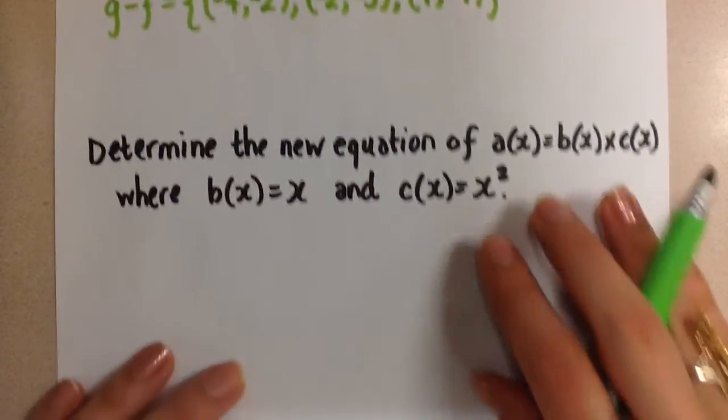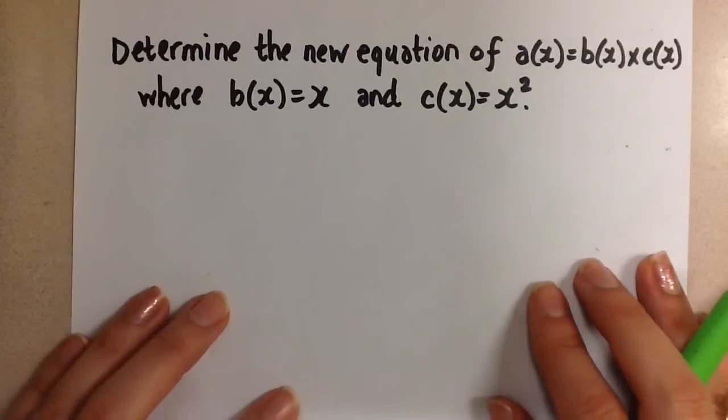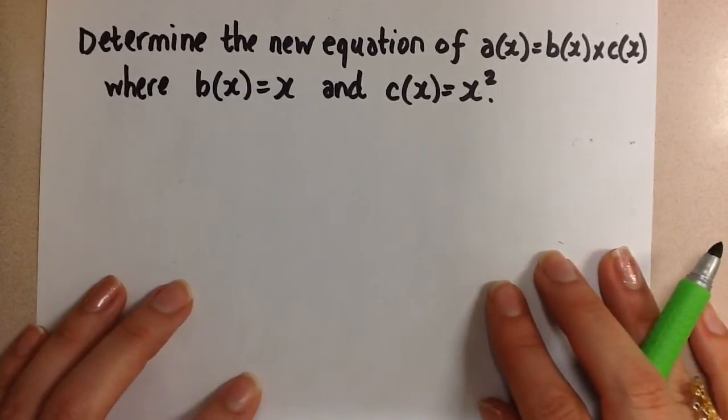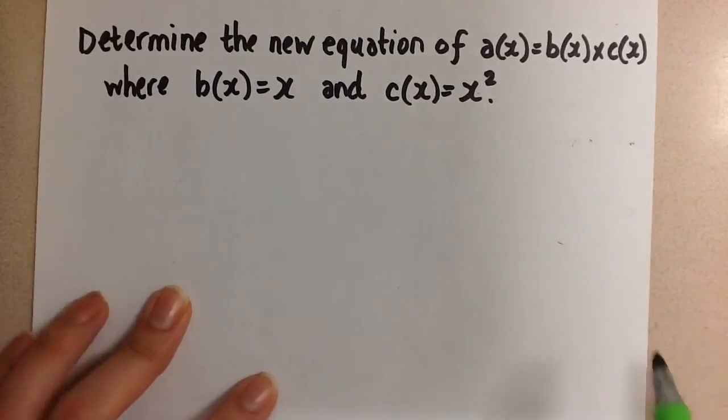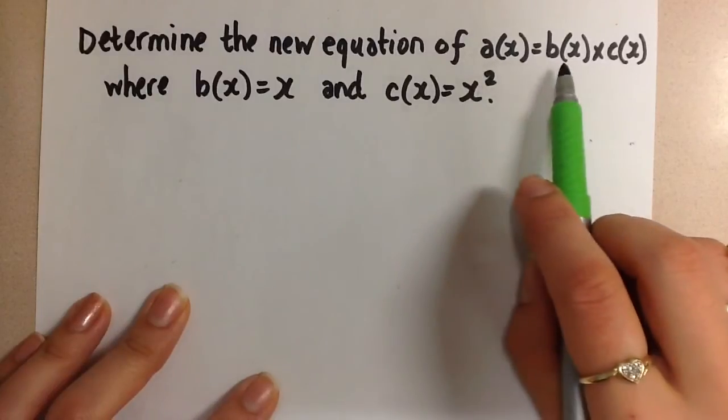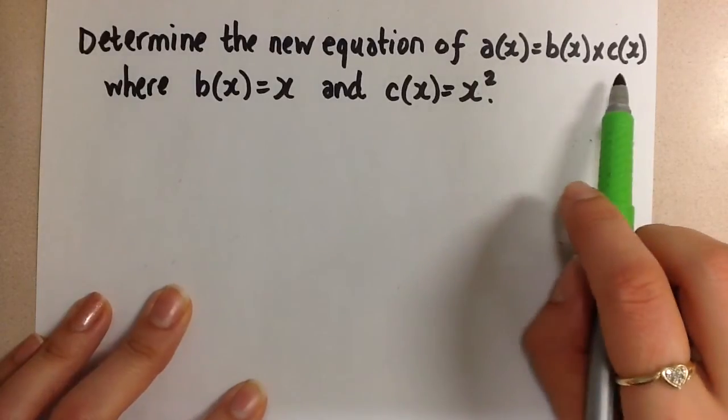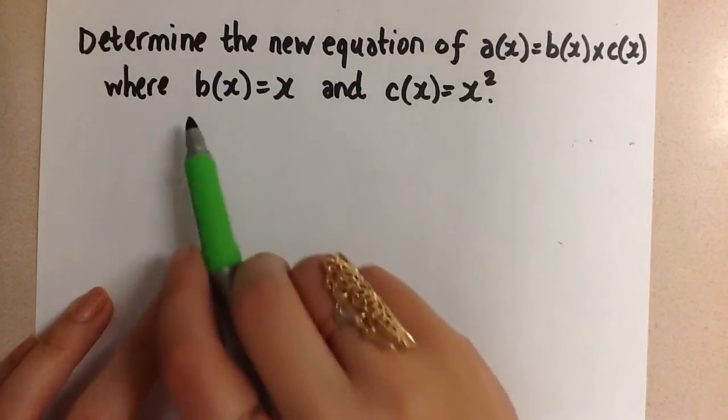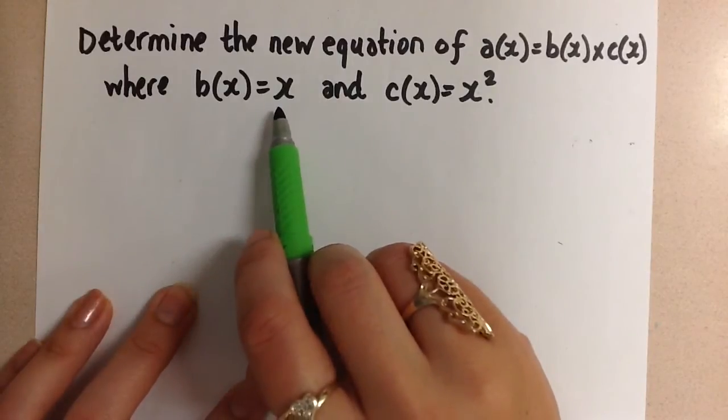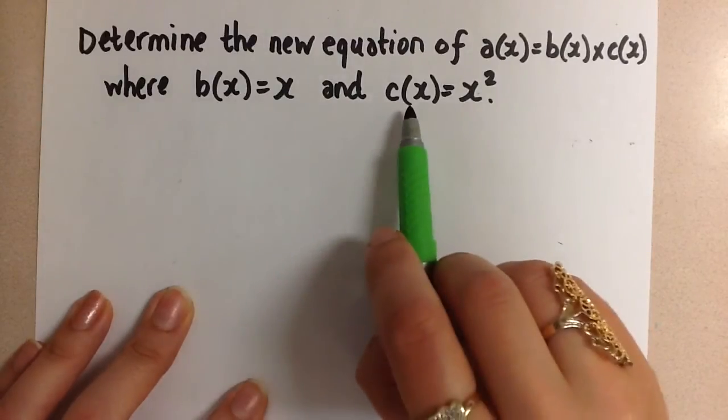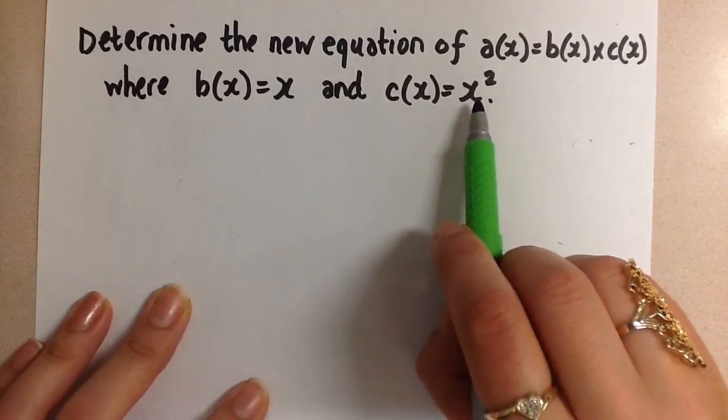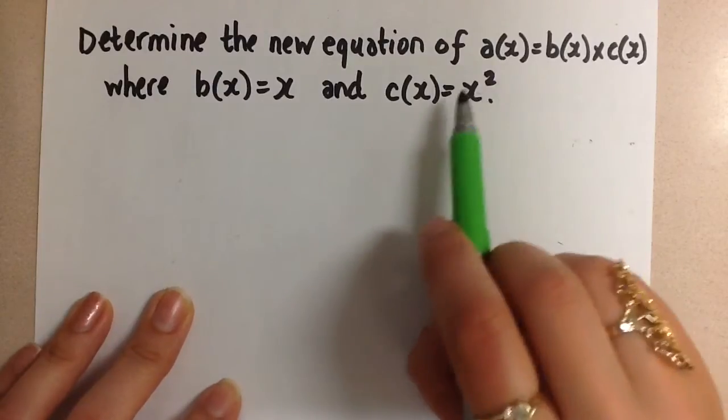Now let's look at another type of question. Here we're asked to determine the new equation for a(x), if we have b(x) times c(x). So they tell us that b(x) = x, which is a straight line, and c(x) = x², which is a parabola.